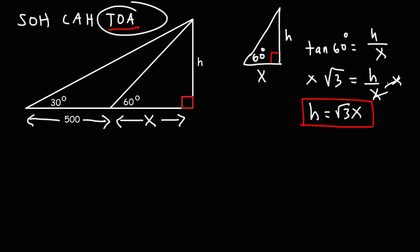So what we're going to do is we're going to focus on the larger right triangle. That is this triangle. Let me use a different color. This triangle in blue. We're going to focus on that one. So this is still h. The angle is now 30. The adjacent side is the sum of those two values. It's x plus 500.